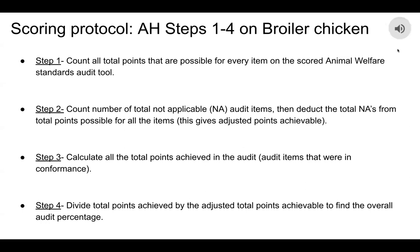There are four steps for the American Humane scoring protocol on broiler chicken. Step one includes counting all total points possible for every item on a scored animal welfare standard. Step two: count the number of total not-applicable audit items, then deduct the not-applicable total points possible — this helps adjust points achievable. Step three: calculate all total points achieved in the audit. Step four: divide the total points achieved by the adjusted total points achievable to find the overall audit percentage.